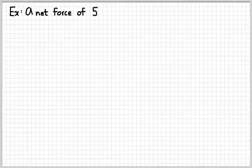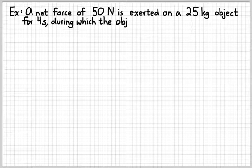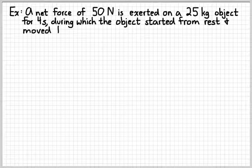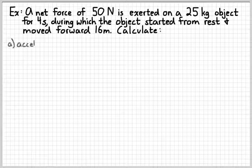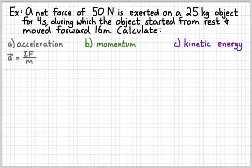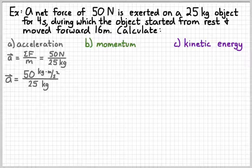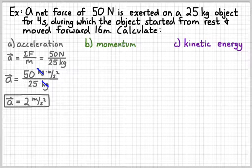Suppose we have a 25-kilogram object that has a net force of 50 newtons acting on it, and the force acts for four seconds. The object starts from rest and moves forward 16 meters. To find the acceleration, we substitute into the first form of Newton's second law: net force over mass. So 50 newtons over 25 kilograms — rewriting a newton as kilogram times meter per second squared so we can see the units — the kilograms cancel, leaving meters per second squared. That's a relatively straightforward plug and chug giving us 2 meters per second squared.